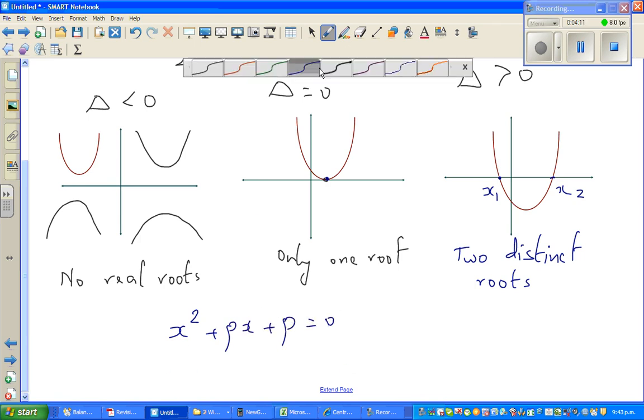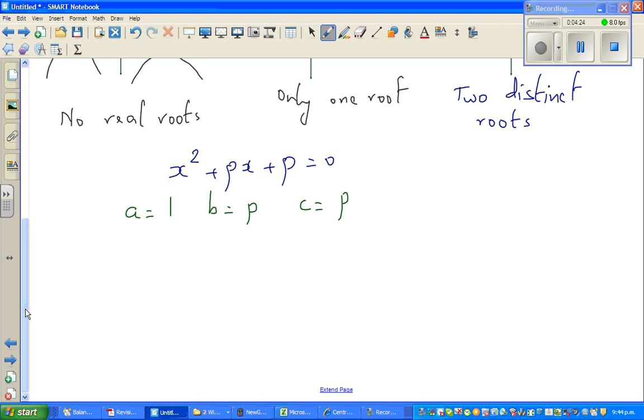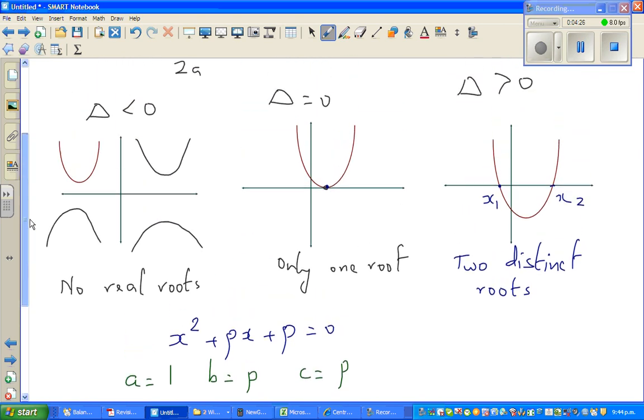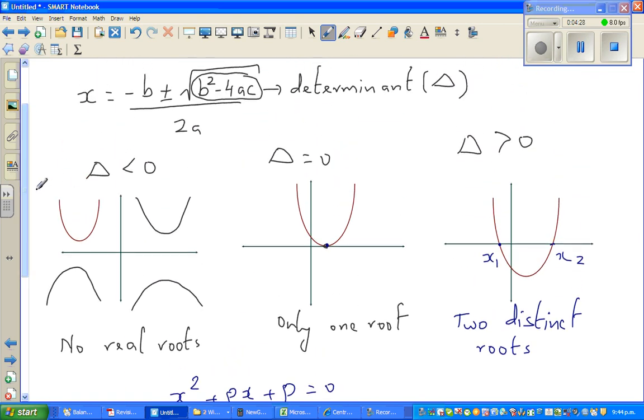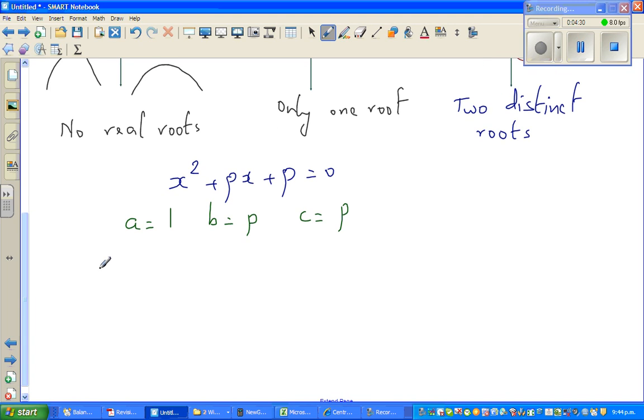First let me decide what is a, b, and c. My a is the coefficient of x squared which is 1, b is the coefficient of x which is p, and c is the constant which is again p. We know there are no roots, so we also know that delta is less than 0.